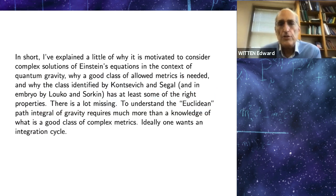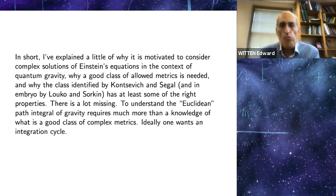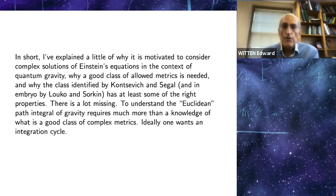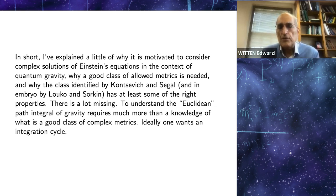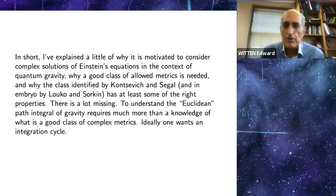In short, in today's lecture I've explained a little of why it's motivated to consider complex solutions of Einstein's equations in the context of quantum gravity, why a good class of allowed metrics is needed, and why the class identified by Kontsevich and Segal — and in embryo previously by Louko and Sorkin — has at least some of the right properties. There's a lot missing. The biggest thing which is missing is that to understand the so-called Euclidean path integral of gravity requires much more than a knowledge of what's a good class of complex metrics. Ideally, you want an integration cycle, which is extremely far from being understood. Thank you, and let me congratulate again Thibault D'Amore on this occasion.